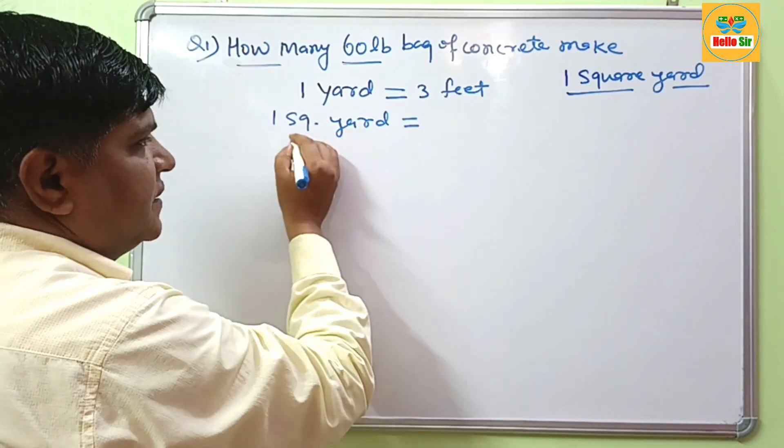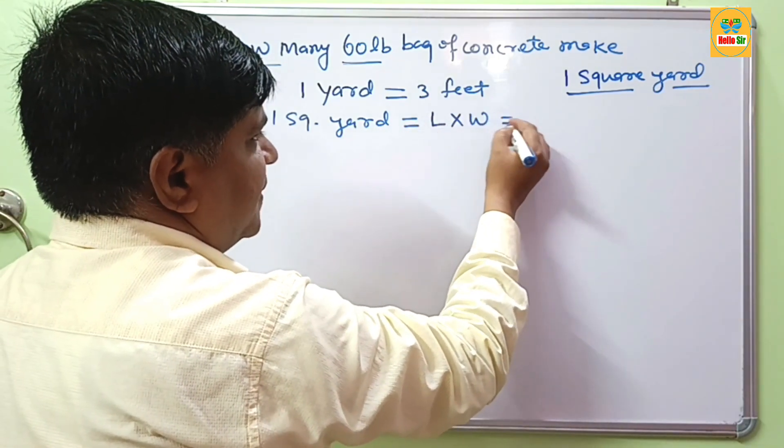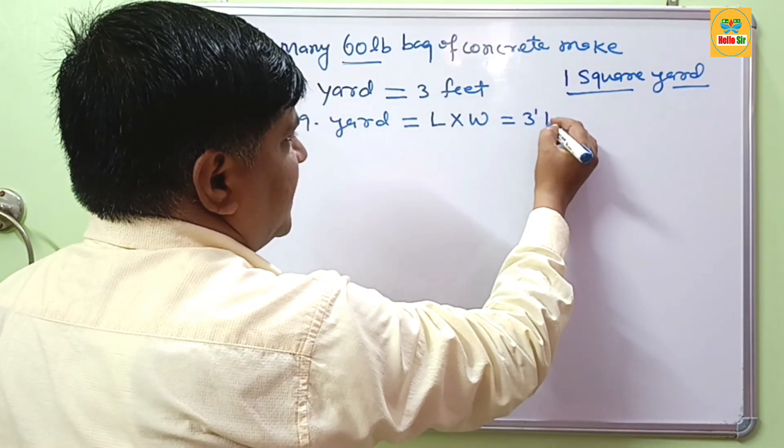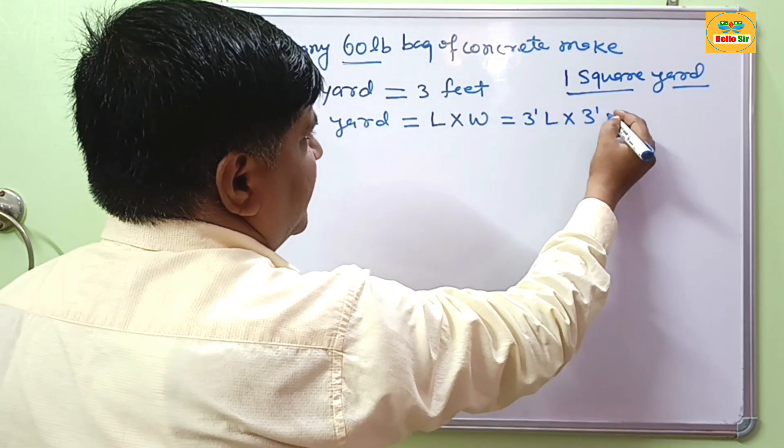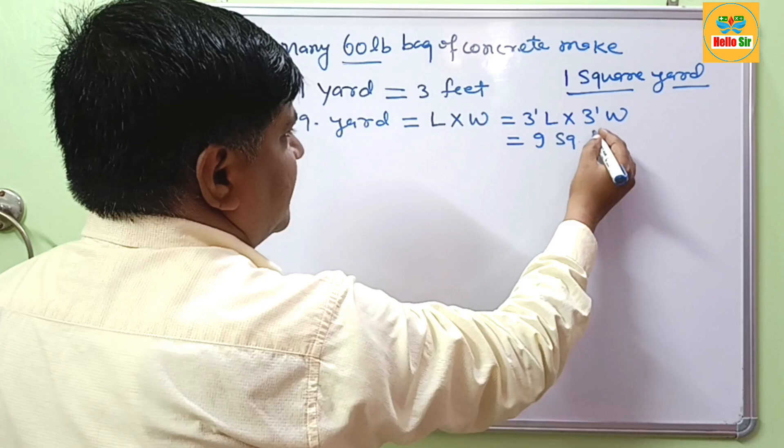It means this is area measurement, meaning length and width. 1 square yard is equal to about 3 feet in length and 3 feet in width, which equals 9 square feet.